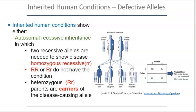Autosomal recessive disorders are caused by recessive alleles on the autosomes — chromosomes that don't determine your sex. If you have an autosomal recessive condition, it means you are homozygous recessive for that gene pair. Disorders like Tay-Sachs, albinism, and cystic fibrosis are all autosomal recessive. Individuals affected by those conditions are homozygous recessive for those specific gene pairs — not for every gene pair in their body, just for those particular gene sets.